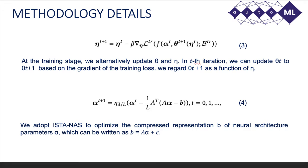At the training stage, we alternatively update theta and eta. In the t-th iteration, we update theta_t to theta_{t+1} based on the gradient of the training loss. We regard theta_{t+1} as a function of eta. The loss function is computed based on theta_{t+1}, which is used to update eta as in equation 3. We adopt ENAS-style NAS to optimize the compressed representation B of neural architecture parameter alpha, which can be written as B = A*alpha + epsilon, where A is a randomly initialized matrix. The architecture parameters are optimized through equation 4.